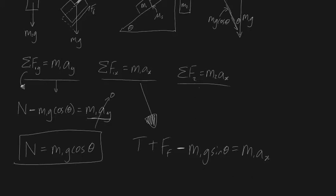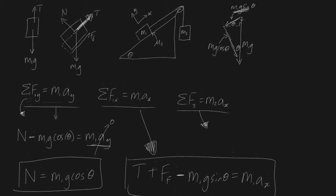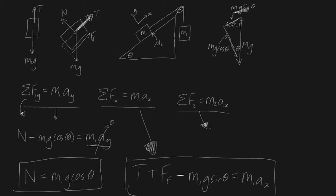For the second block, the sum of forces is m2g minus T equals m2ax. Notice it must be this way around because the acceleration is positive downwards — that's ax.